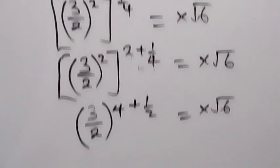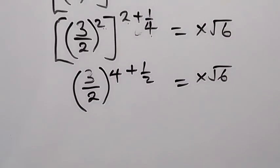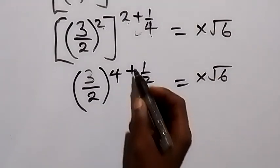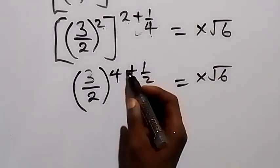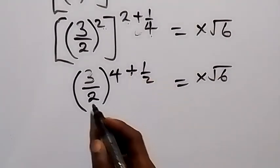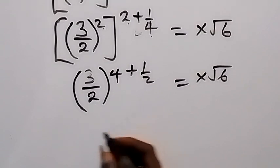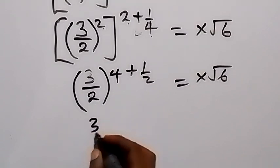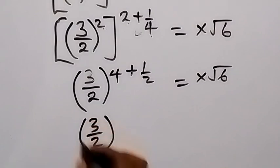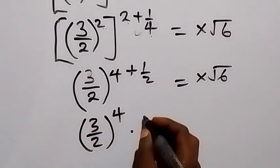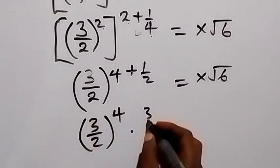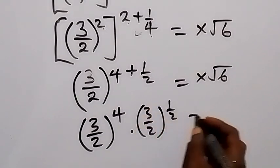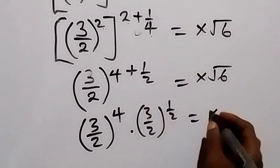From here we can write this power separately. Since the same base is multiplied, we can write this as 3 over 2 raised to power 4, multiplied by 3 over 2 raised to power half, which equals x root 6.